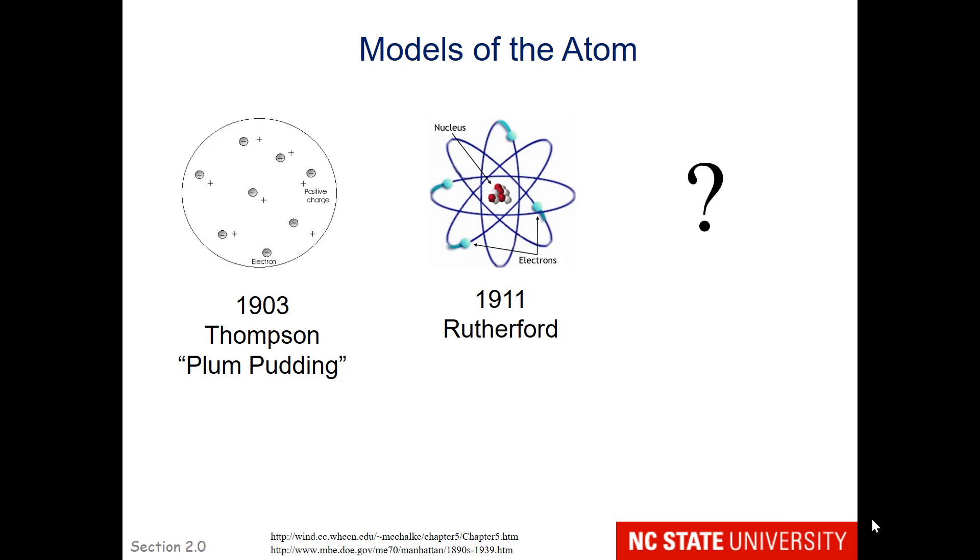Before Rutherford came along in 1911, there was a previous model of the atom called the plum pudding model of the atom, where the electrons were like the raisins in plum pudding, the negative charge spread out among the positively charged circle of the atom, just like raisins in plum pudding.